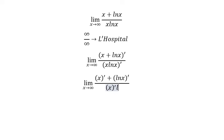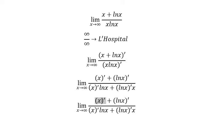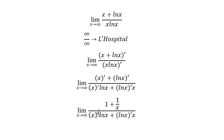So now I will simplify this one. The first derivative of x you get 1. The first derivative of ln x you get 1 over x. x multiplied with 1 over x you get 1.